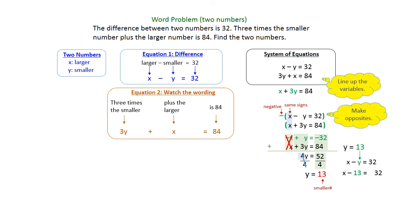So we have x minus 13 equals 32. Add the 13 to both sides. And you find that x equals 45. And that is indeed our larger number.